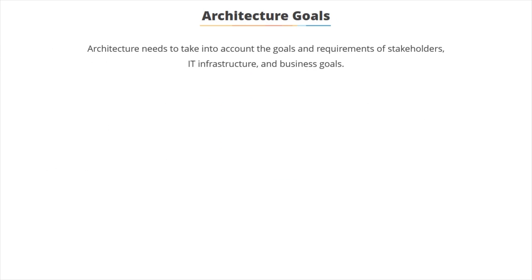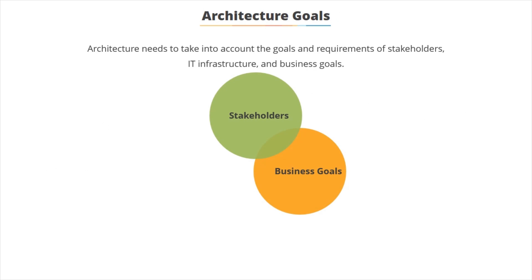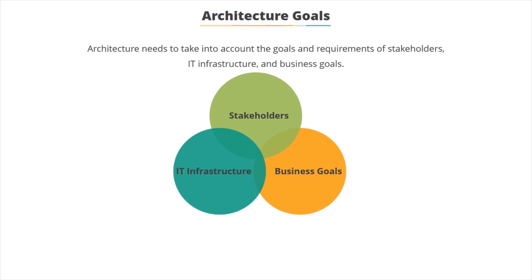So what are the goals of architecture? It involves various people, various parties — the stakeholders, the business goals, and also the IT infrastructure which needs to support it. As DevOps, the IT infrastructure is the most important aspect, but there are the other two to take into account. DevOps will be concerned with building the infrastructure to support the architecture that's required.